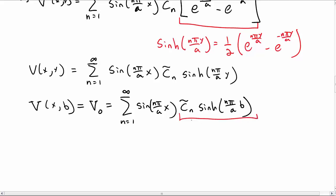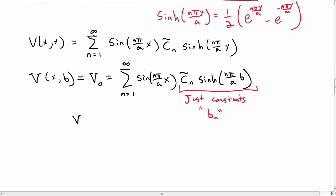We get sum from n equal 1 to infinity sin(n pi x over a) C_n twiddle sinh(n pi over a b). Now we need to solve this. Well, let's notice that all of this business here, the C_n twiddle sinh, are just constants, so let's rename that b_n.